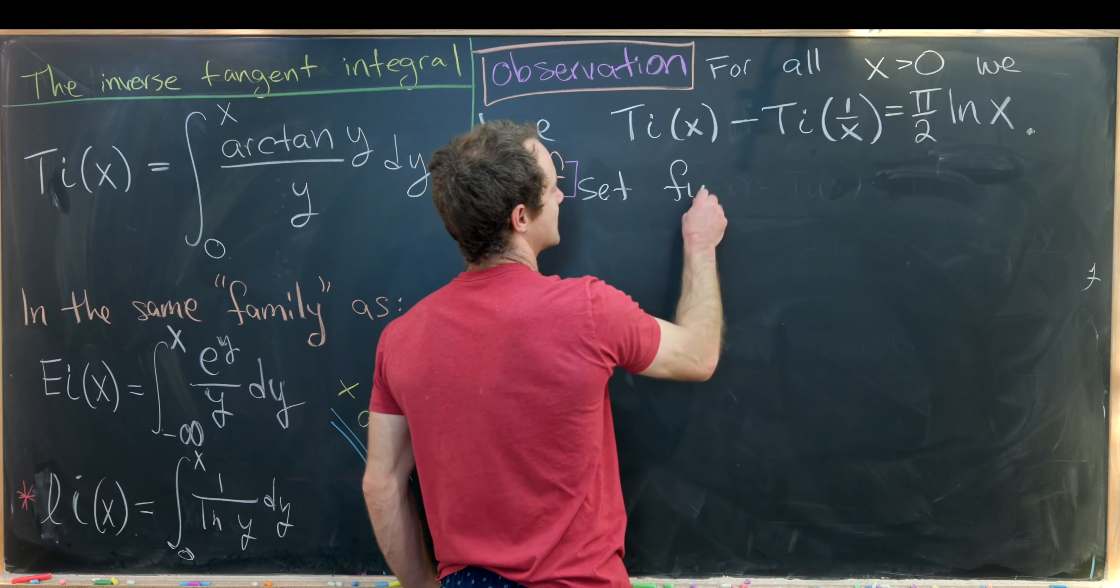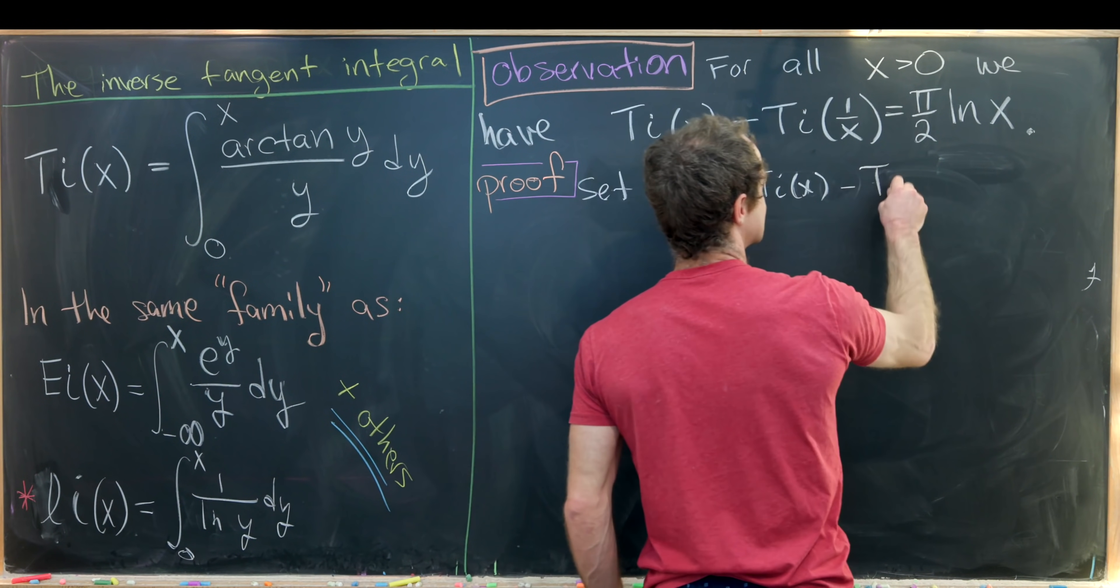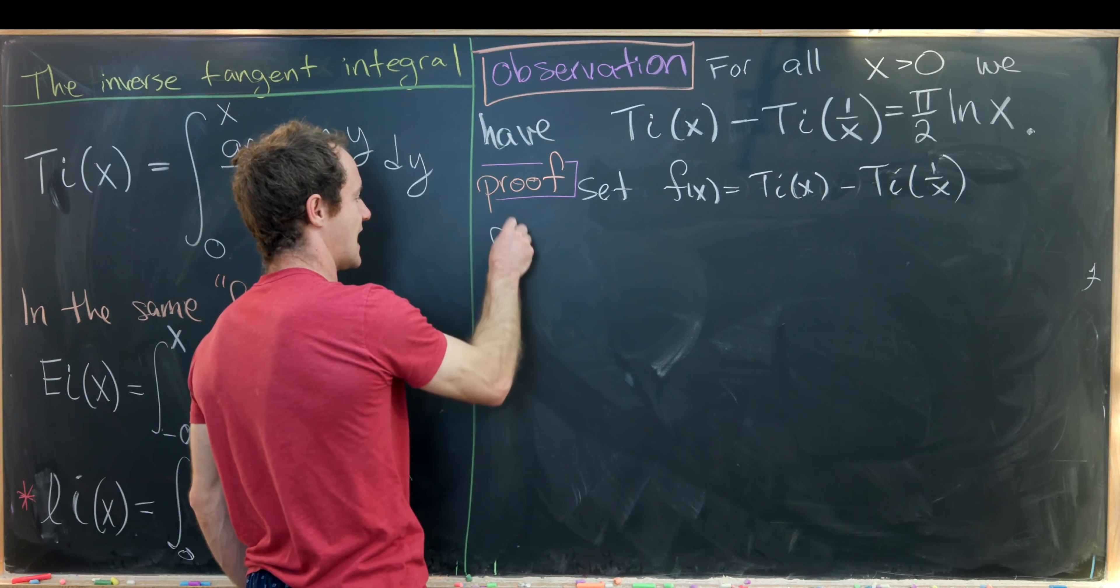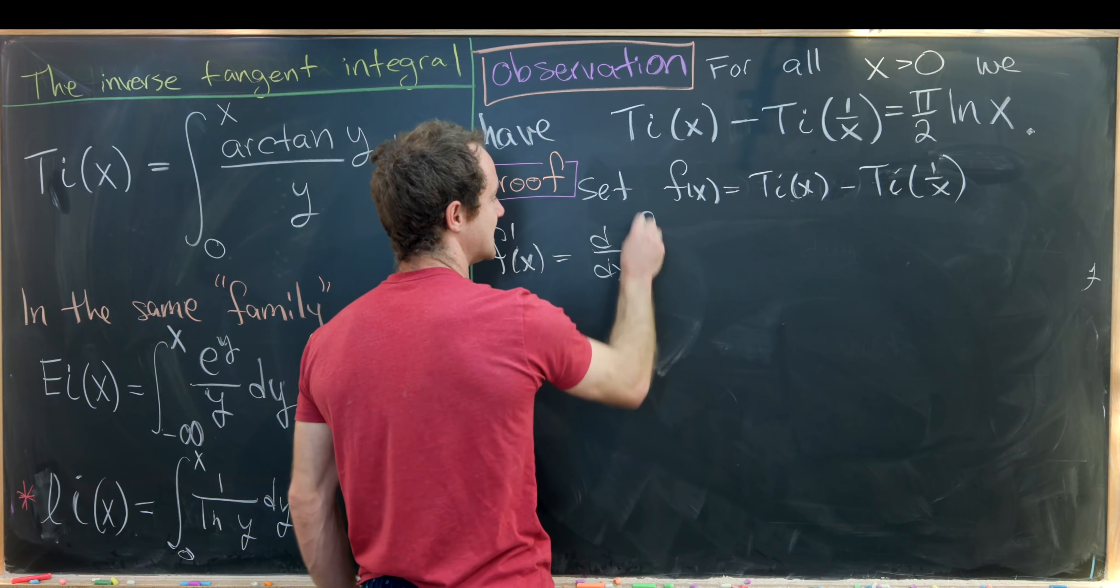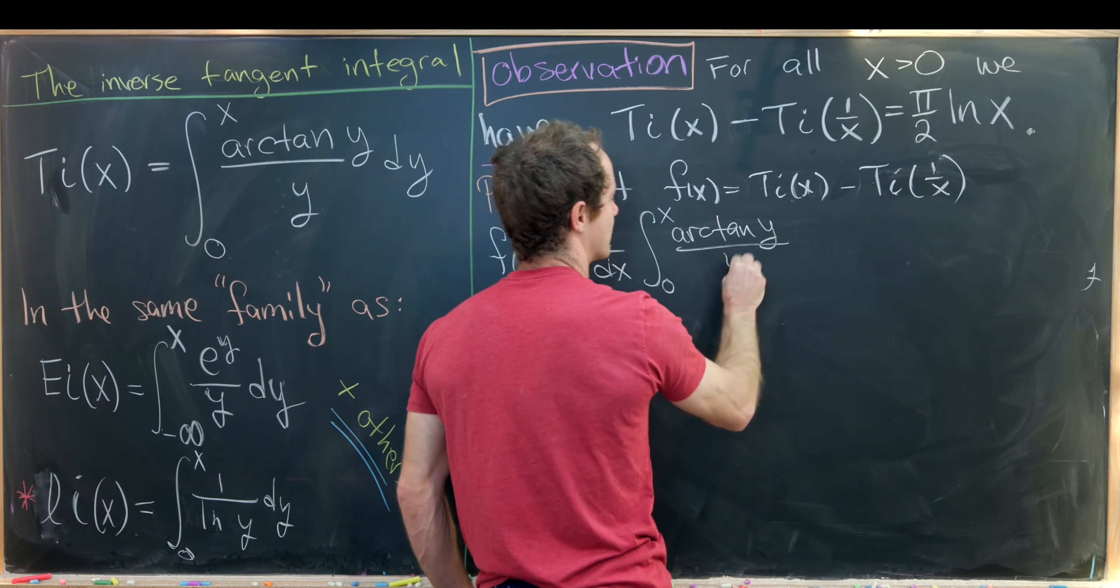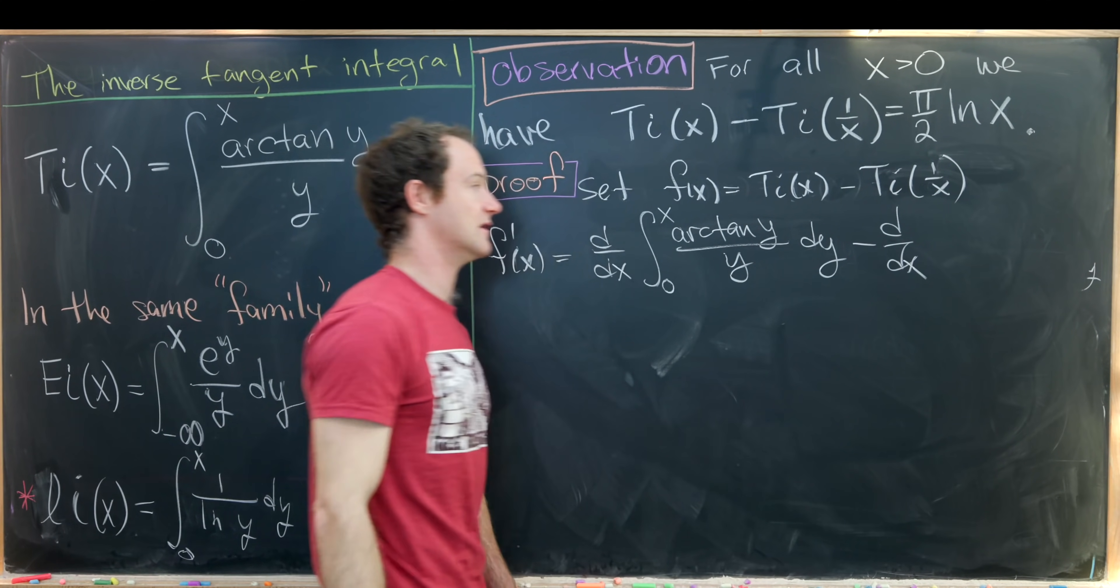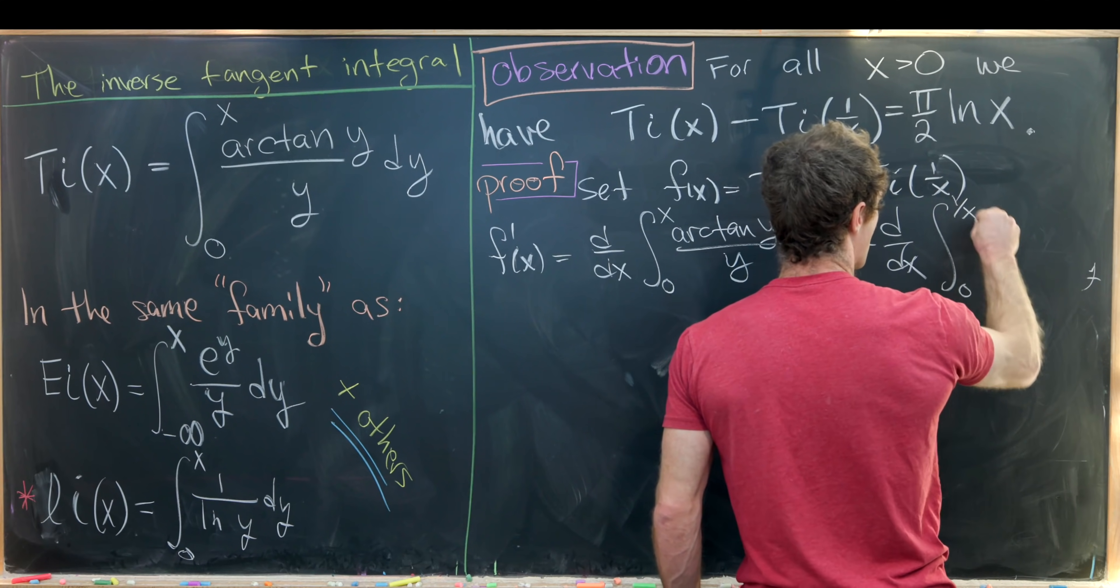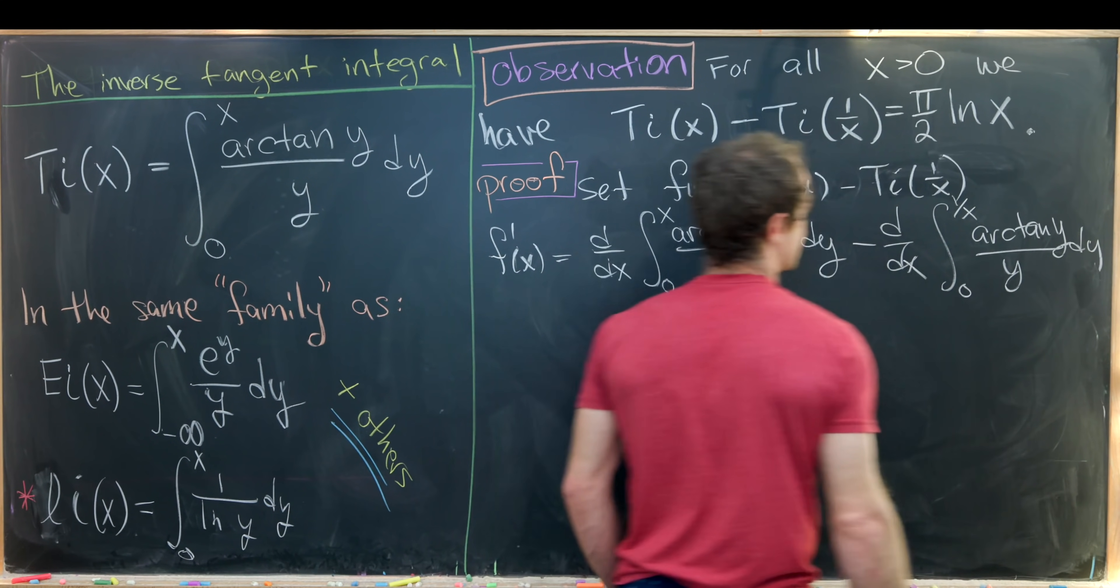So let's set a function f of x equal to this Ti of x minus Ti of 1 over x, and then take the derivative. So we'll have f prime of x is equal to the derivative with respect to x of Ti of x, but that is the integral from 0 to x of arctan y over y dy, minus the derivative with respect to x of Ti of 1 over x, but that's going to be the integral from 0 to 1 over x of that same integrand, so arctan of y over y dy.